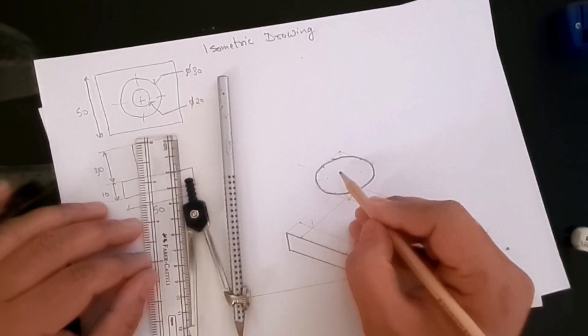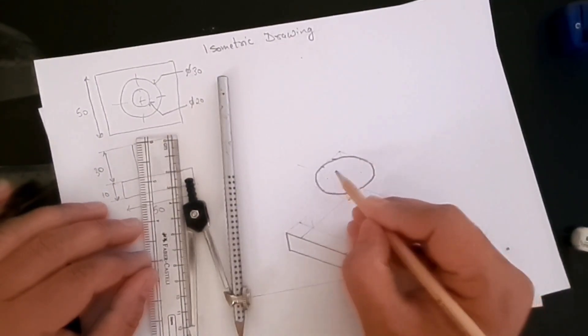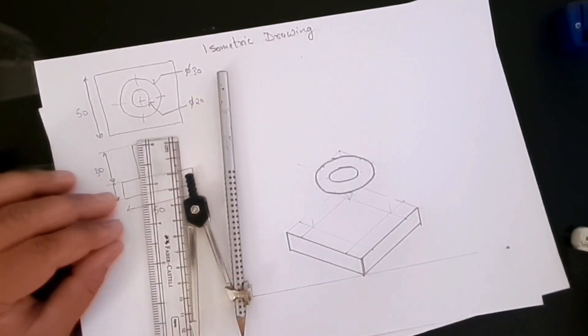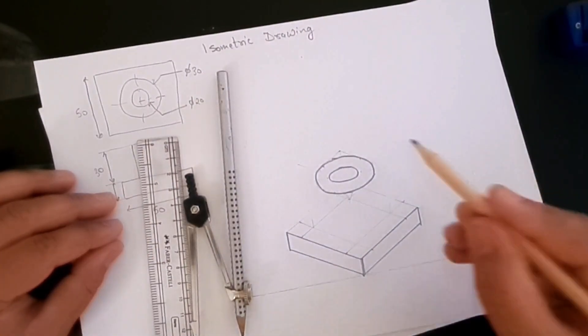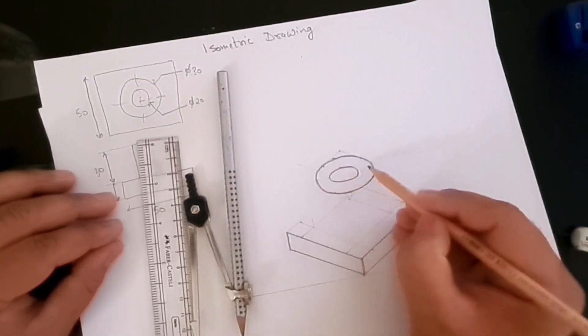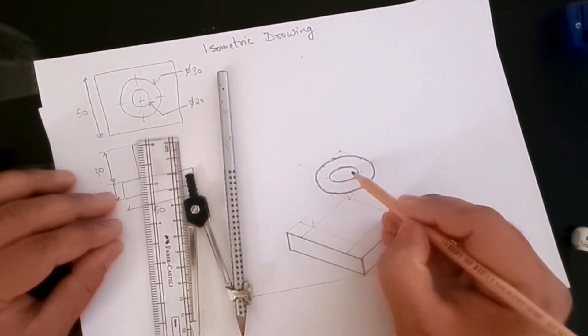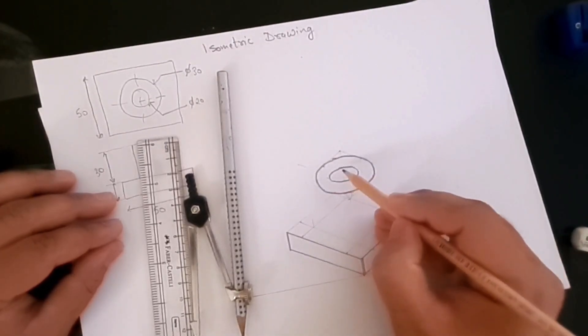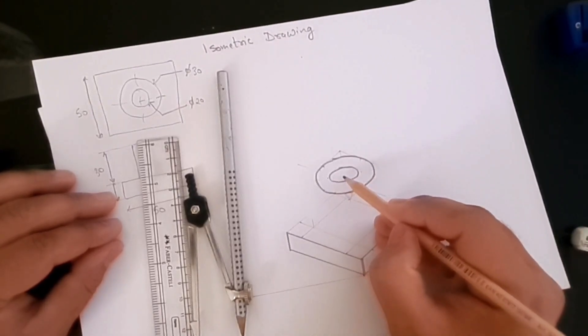The same method we can employ to draw this 20 centimeter, or 20 millimeter hole in here. Now I'll quickly pause the video and then draw that hole and then come back. So here I'm back. What I did is I created that square again and then generated the isometric square and then generated this isometric circle within it.